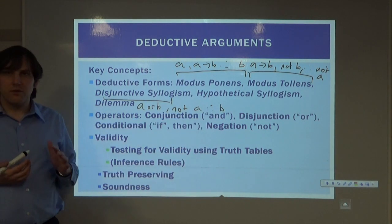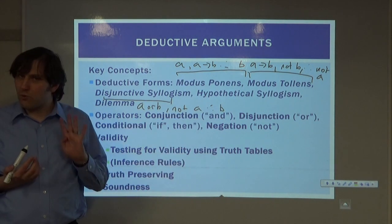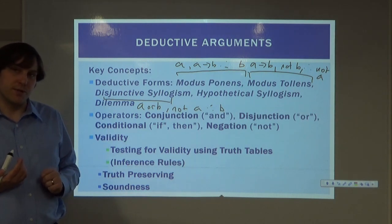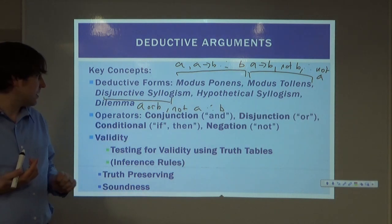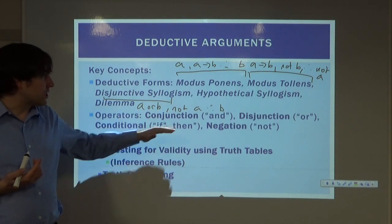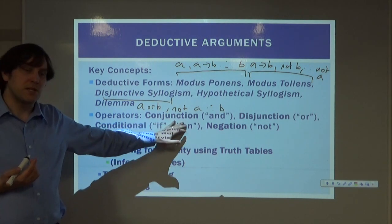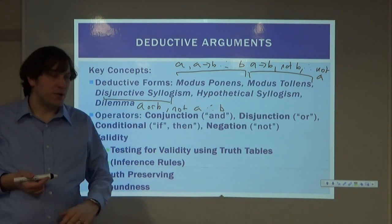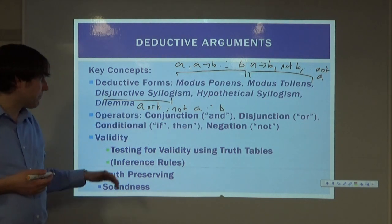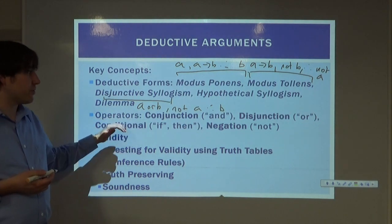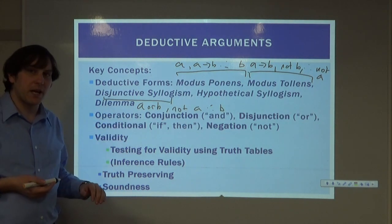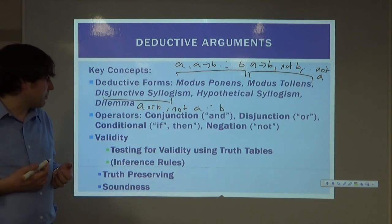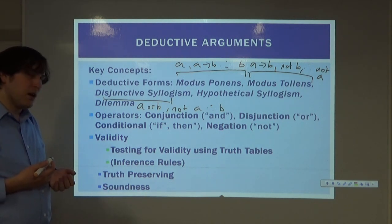There are also about four other operators that we used in this class. There's conjunction which means 'and', there's disjunction which means 'or', there's a conditional which is 'if-then', and there's negation which roughly speaking means 'not'.